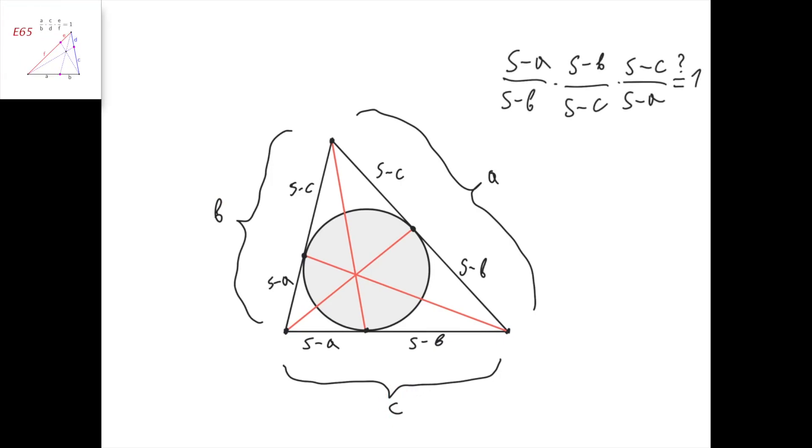So, Cheva's theorem says that this line, this line, and this line intersect at one point if and only if S minus A divided by S minus B times S minus B divided by S minus C times S minus C divided by S minus A equals 1.